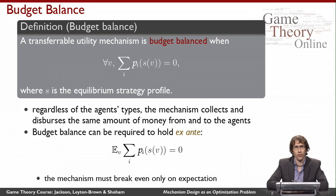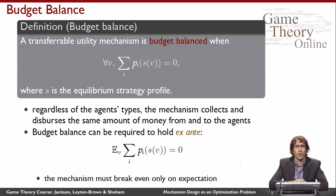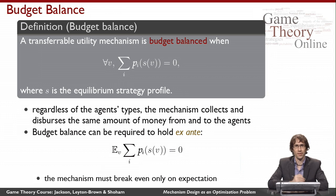I can also make other kinds of variations. It might be too strong to say that no matter what the agents' types are, I never lose or gain any money. I might prefer to talk ex-ante across the agents' valuations — saying this mechanism is going to be run many times and I care about my long-run profit or loss. So I want to say that on expectation over the agents' valuations, the mechanism is strictly or weakly budget balanced.